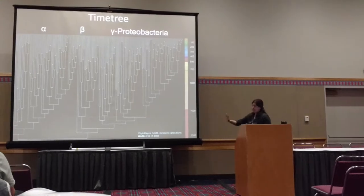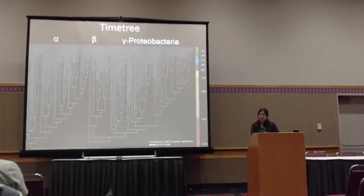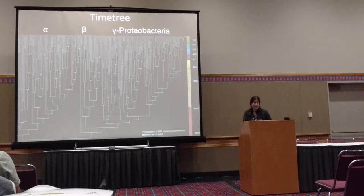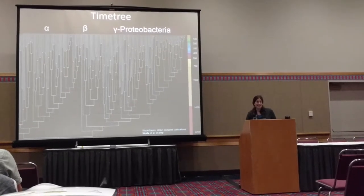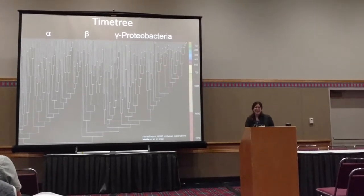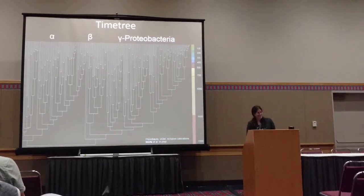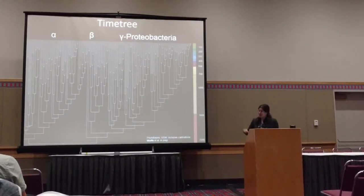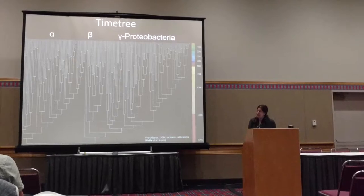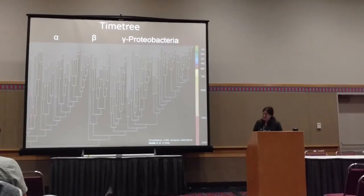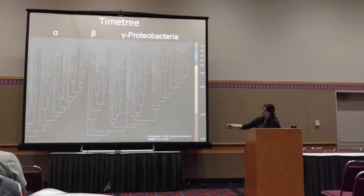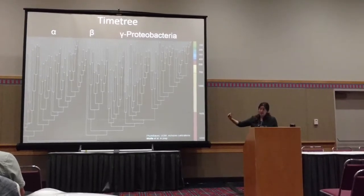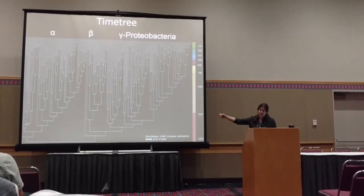This is the time tree we built in PhyloBayes using a topology that we had also validated in RAxML — and this is so brand new that I got this phylogeny yesterday, while I was running around Barcelona and my student was doing all of this work as I texted her from the plane. The mitochondrial priors we used are over here, and these are eukaryotic mitochondrial genes included in this phylogeny, so those fossil ages are from eukaryotic evolution.